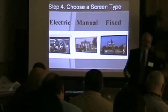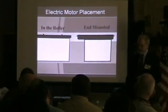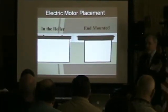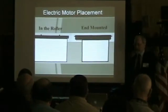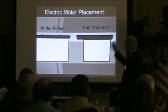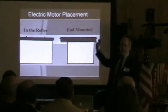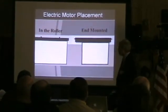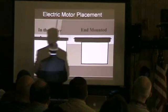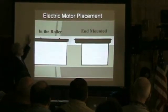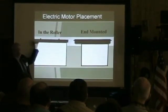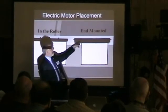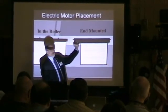The three basic types of screens: electric, manual, and fixed. One of the things you have to be concerned about if you're going up in the ceiling or on a stage is the end-mounted type of motor, as opposed to a motor-and-roller type. With the motor-and-roller type, the screen basically ends here — the motor is actually physically inside the tube — as opposed to an end-mounted type of motor where the motor is on the side.